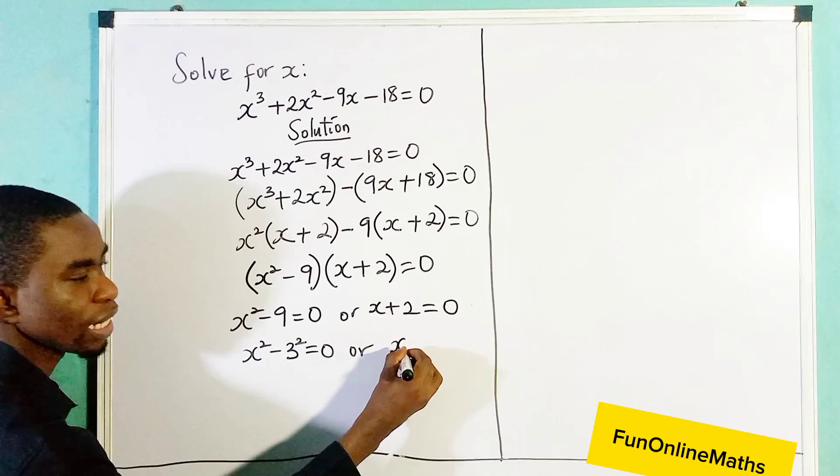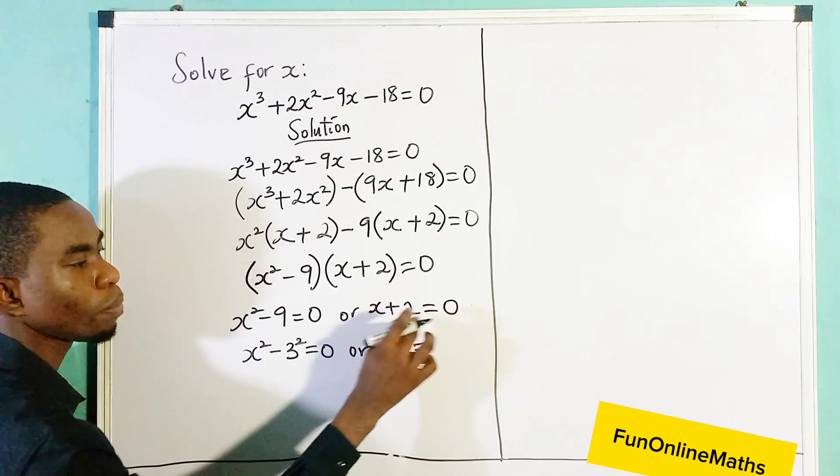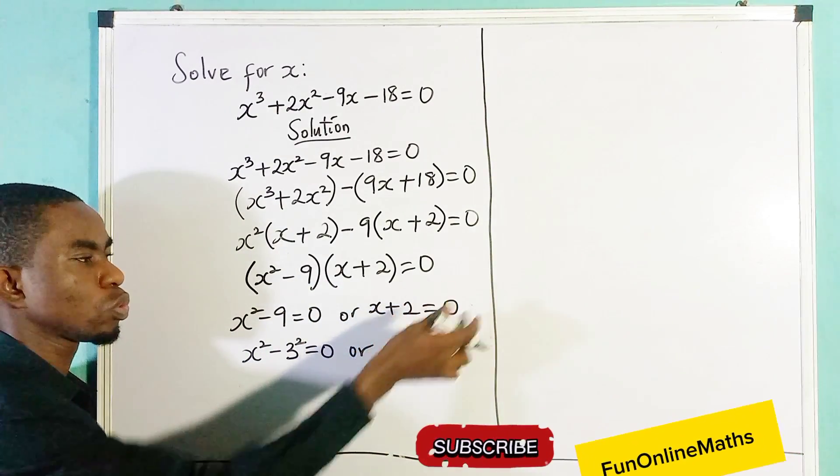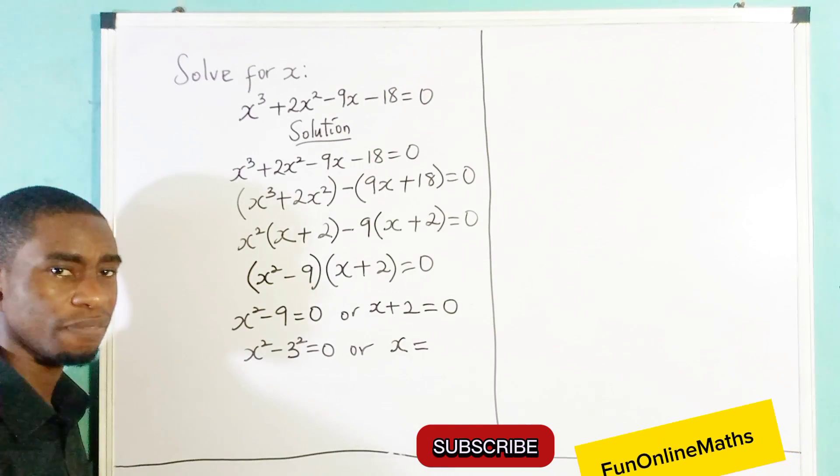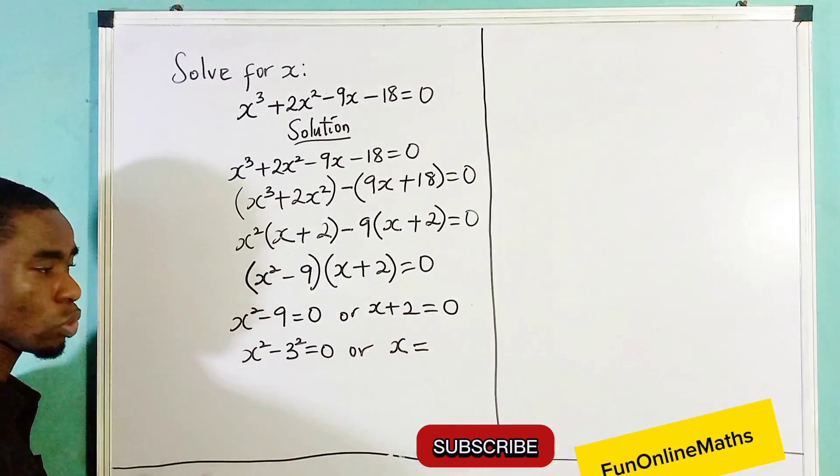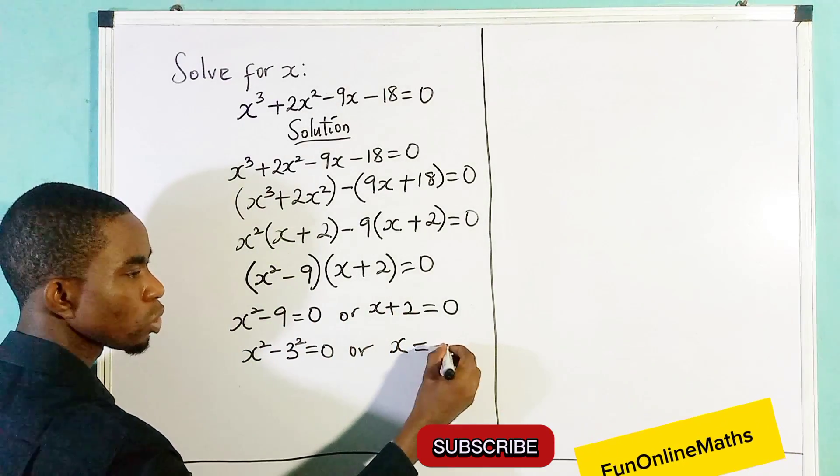Move plus 2 to the right hand side. We just have x left and this equals to zero minus 2, because when you move plus 2 across the equality sign becomes negative. So zero minus 2 is minus 2, so x will be equal to -2.